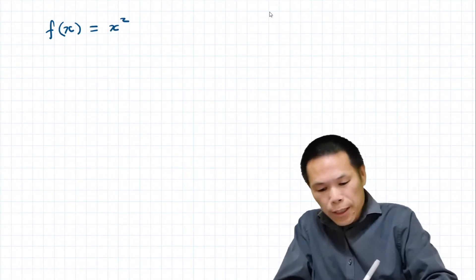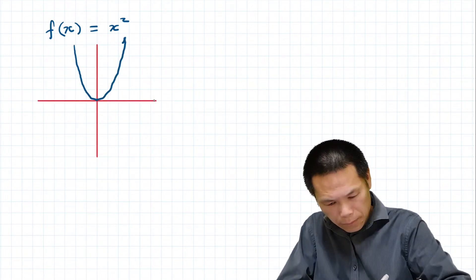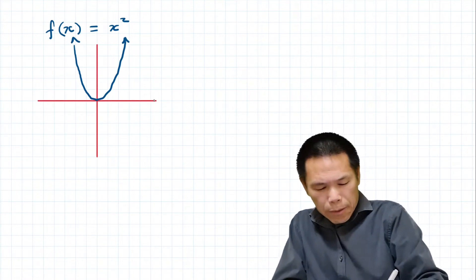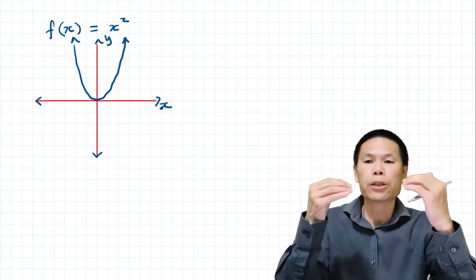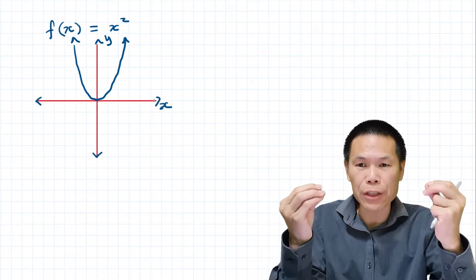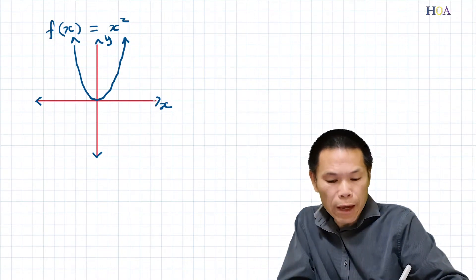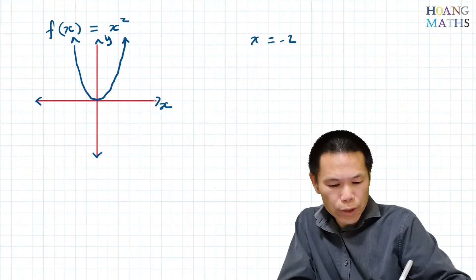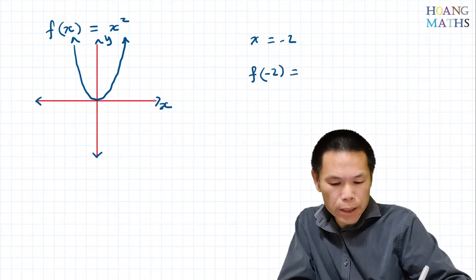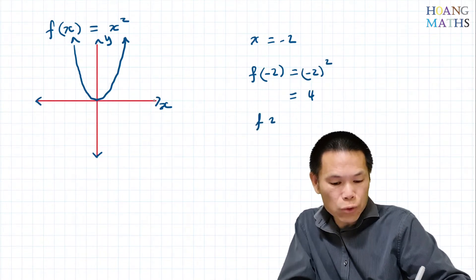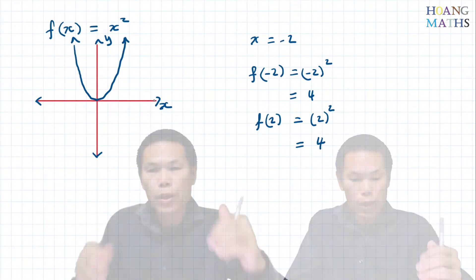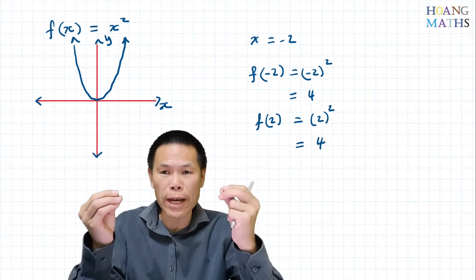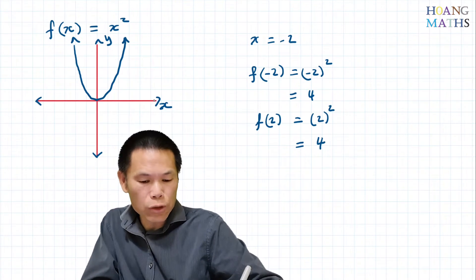So the graph will be like this — let me label this x and this is y. This function is a many-to-one function because if x equals negative 2, f of negative 2 gives negative 2 squared, which equals 4. And f of 2 gives 2 squared, which also equals 4. So we have two inputs and one output.